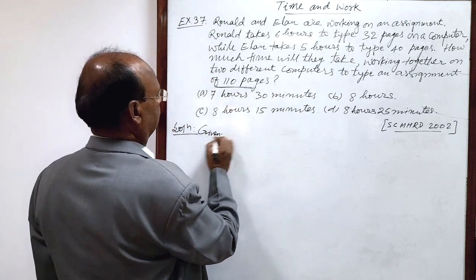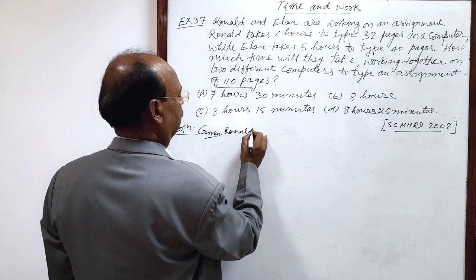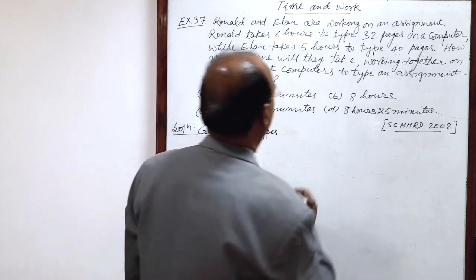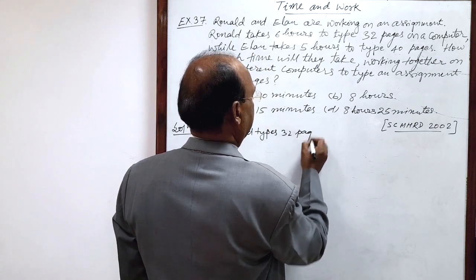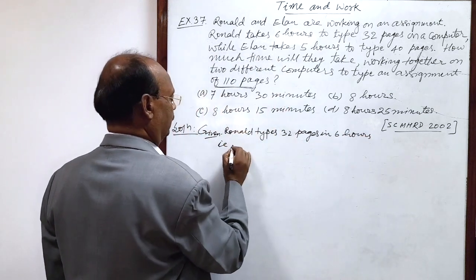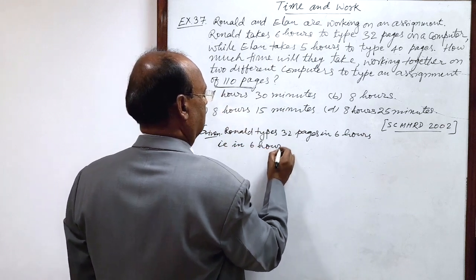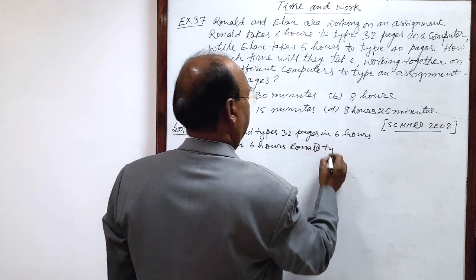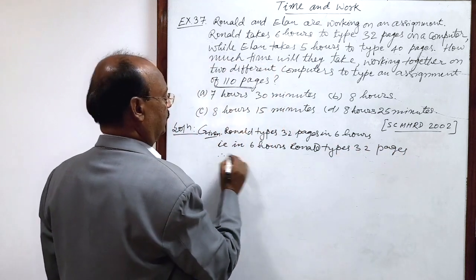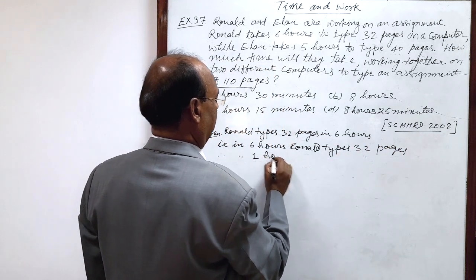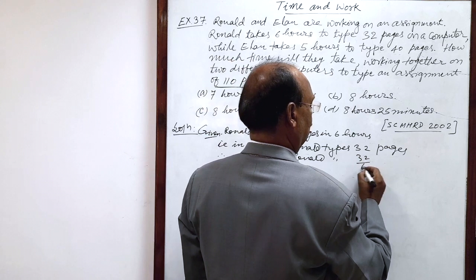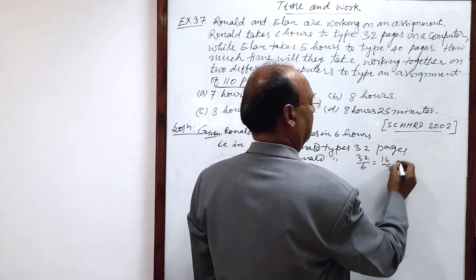So, here given, Ronald types 32 pages in six hours. That is, in six hours, Ronald types 32 pages. Therefore, in one hour, Ronald types 32 by 6 is equal to 16 by 3 pages.